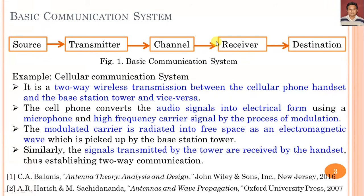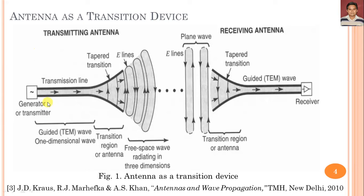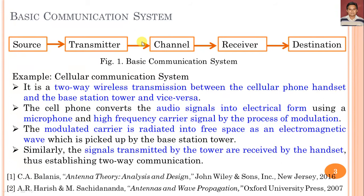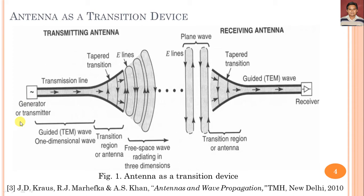We can say that the antenna acts as a transition device. Considering the transmitting section and the receiving section, after the transmitter we have the antenna, then the channel, and then the receiving antenna section. By using a generator or transmitter, we create a two-wire transmission line, and in this transmission line, guided TEM (transverse electromagnetic) waves will be generated as per the current that flows in the transmission line.